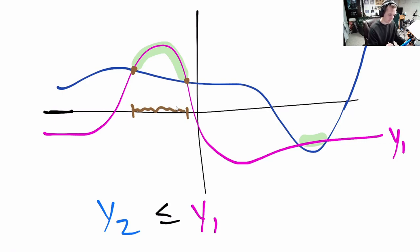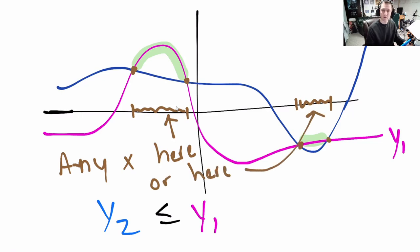Everywhere else, the blue one is above the pink one. So what are the x's that make this inequality true? They are the x's that correspond to these arcs, right there, those two intervals. So any x here or here. There's two intervals that make this true.